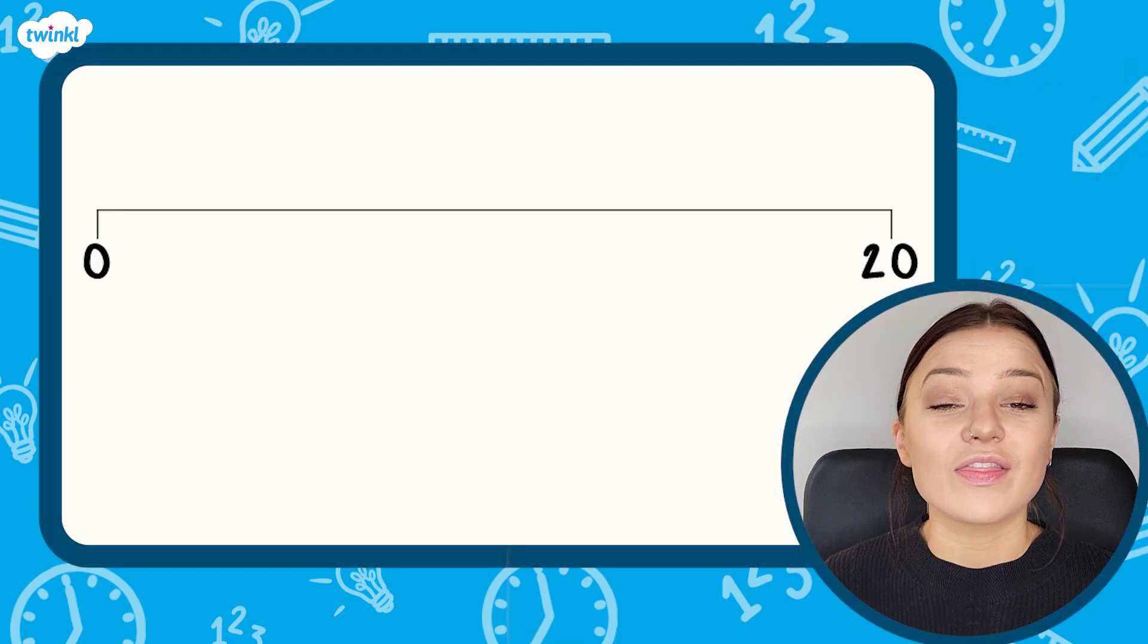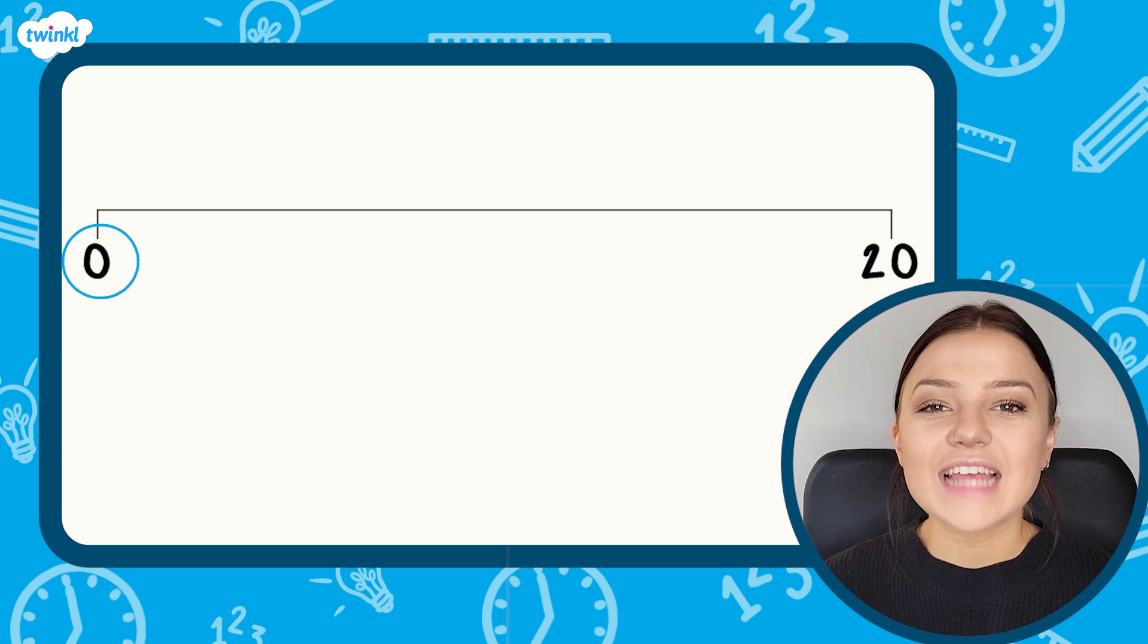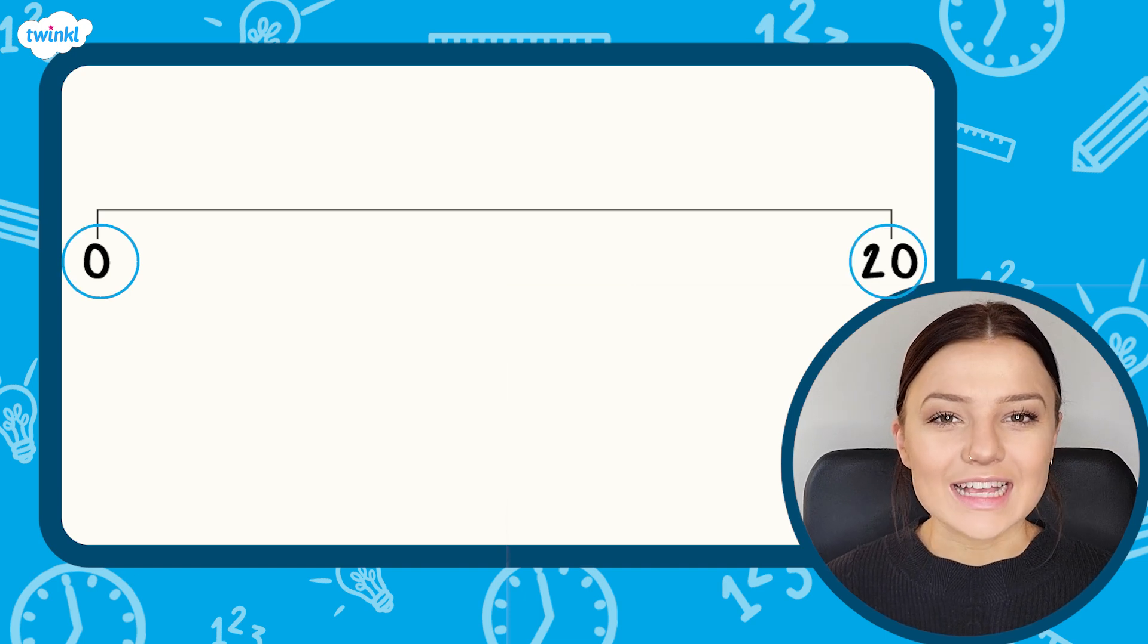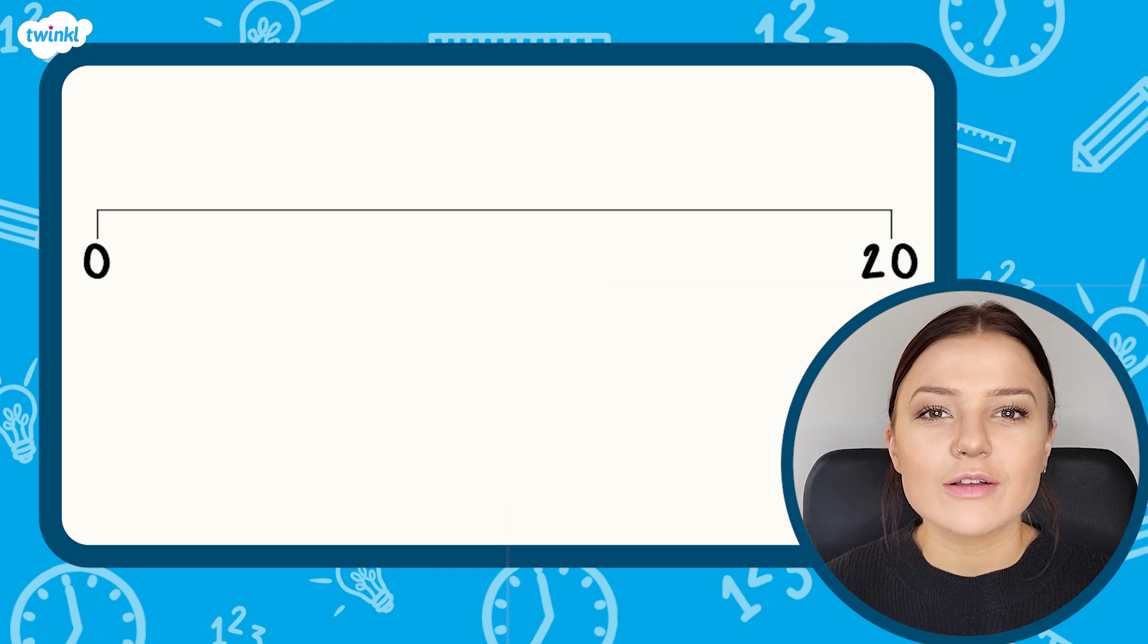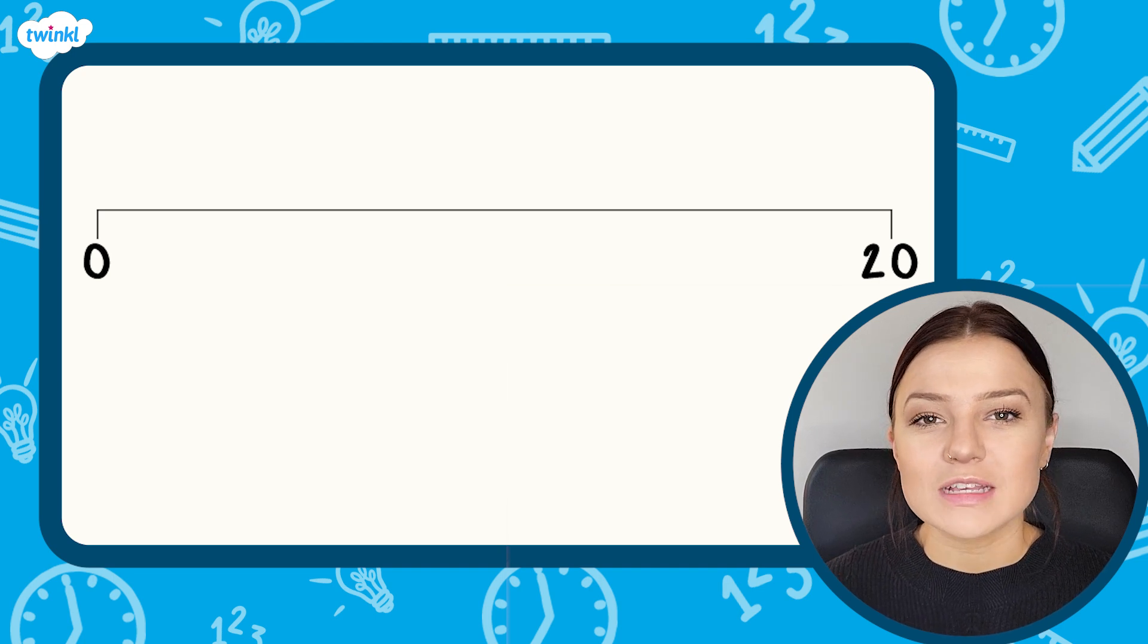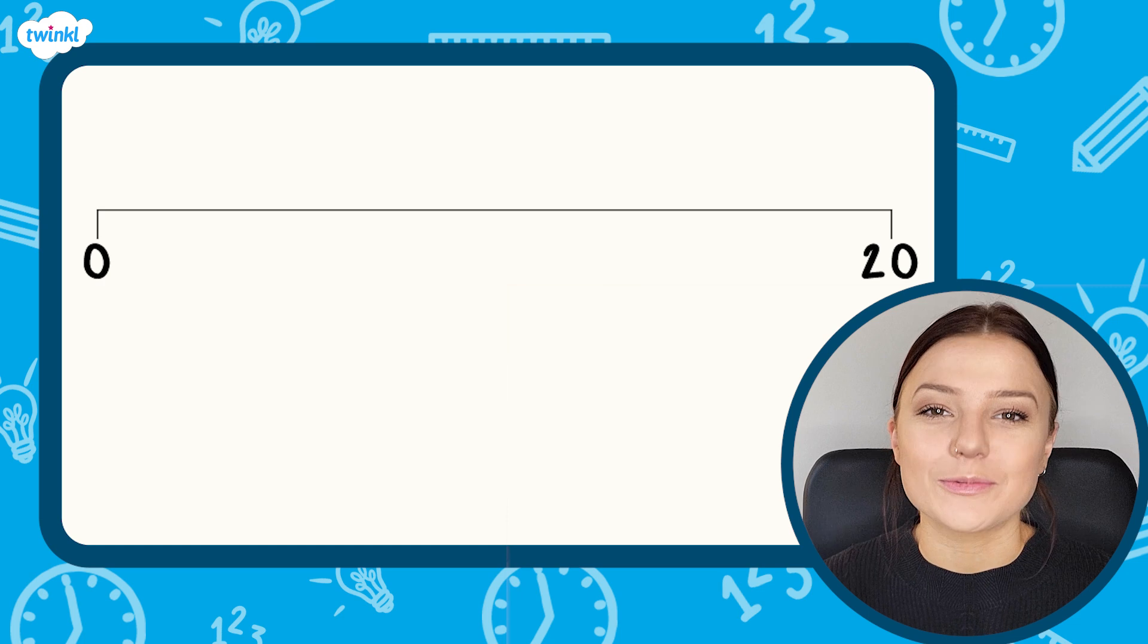Here I have a number line that starts with 0 and ends in 20. As you can see, there are no other numbers on my number line, so I need to use my knowledge of counting to estimate where the numbers between 0 and 20 would be.